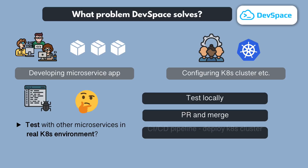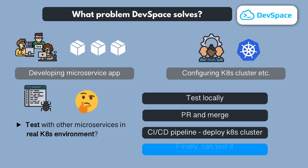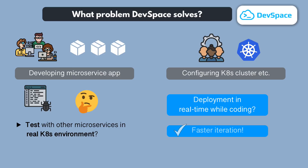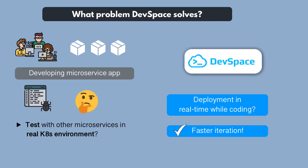The CI/CD pipeline is triggered, tests the changes, builds the new image, and deploys it into the Kubernetes cluster on the dev environment. Now you can test it on dev to make sure it works there the same way it worked locally. This is a long process to be able to test your changes on the Kubernetes dev environment. So what if instead every change you make locally would be immediately deployed into the Kubernetes cluster, so you can test your changes without having to know Kubernetes or kubectl, or needing help from the DevOps team? The tool that lets you do exactly that is Dev Space.